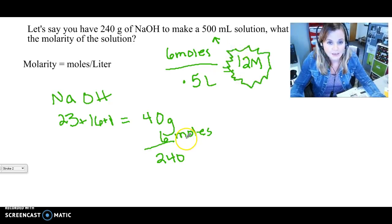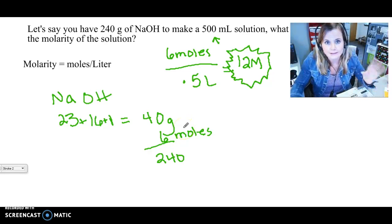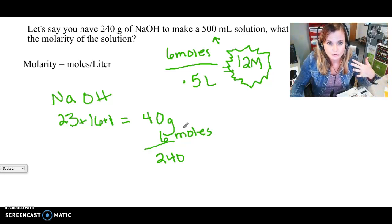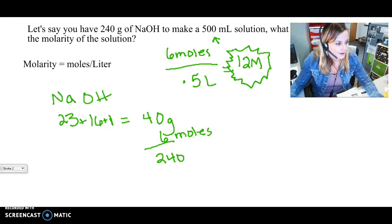That's just gonna dissolve your hands so be very careful. That's the gist of how you do this kind of problem. You're first gonna figure out the molar mass of the compound, then you're gonna figure out how many moles you have of that compound, and then you're going to divide it by the number of liters that you have. So just make sure you convert your liquid measure into liters and not milliliters.